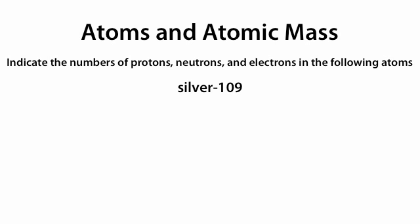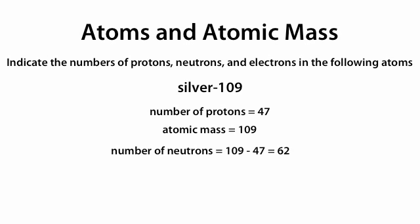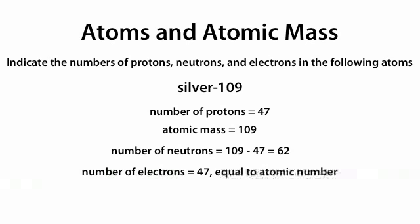Similarly, if we're given silver-109, the number of protons is still 47, because we know silver has 47 protons, or an atomic number of 47. The atomic mass equals 109, the number given next to the dash in silver-109. The number of neutrons equals the atomic mass minus the atomic number: 109 minus 47 equals 62. The number of electrons equals 47, equal to the number of protons, or the atomic number.